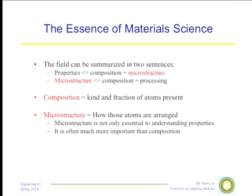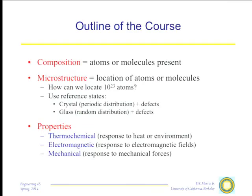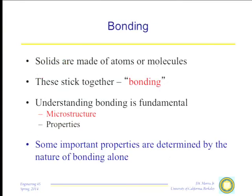We process materials to reconfigure their atoms — that is, to give them a certain microstructure — so that they will have a particular set of properties. In the course, I'm going to talk about atoms today, then we'll show how we describe microstructure, and then talk about how that microstructure determines properties.